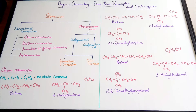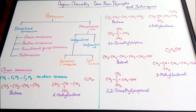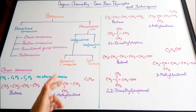Isomerism is a phenomenon shown by molecules which have the same molecular formula but vary with respect to certain physical and chemical properties. Isomerism is mainly classified into two types: structural isomerism and stereo isomerism.